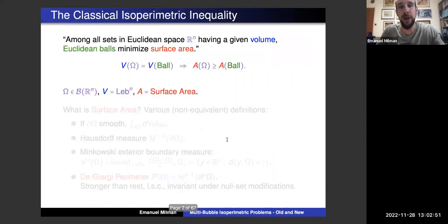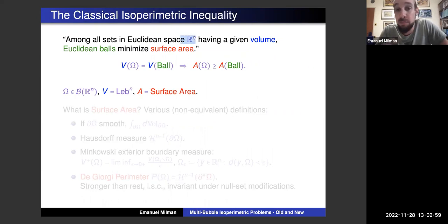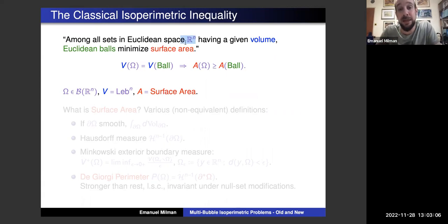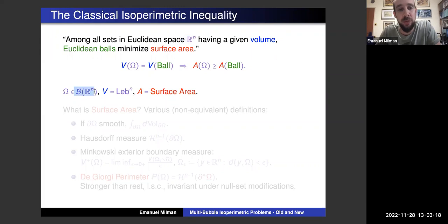It makes sense to start the talk by reminding us of the classical isoperimetric inequality in Euclidean space ℝⁿ, which goes back at least — in dimension two or three — to the ancient Greeks. This is the well-known statement that among all sets in ℝⁿ having a given volume, Euclidean balls minimize surface area. By sets I mean measurable sets — let's say Borel measurable.